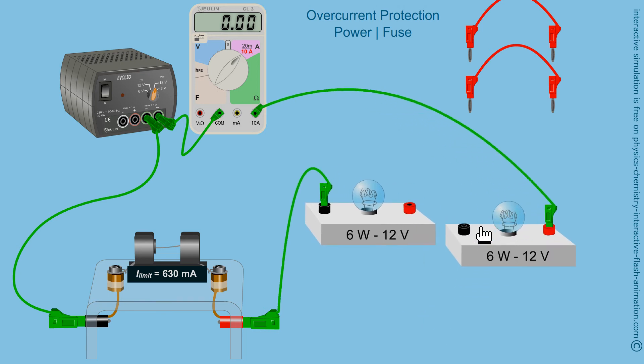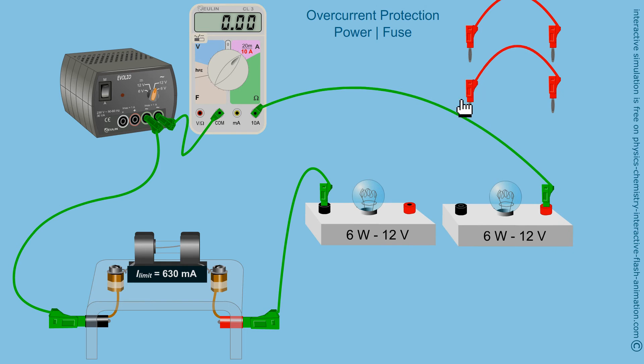If I put two bulbs in series, the current will be less. 330 milliamps. So, no problem, except that the lighting is poor.